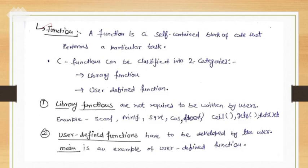Whatever statements are in the block will be relevant — that is the most summarized form of coding to perform a particular task. We have two types of function categories: library functions, meaning predefined functions present in the C library, and next are user-defined functions.